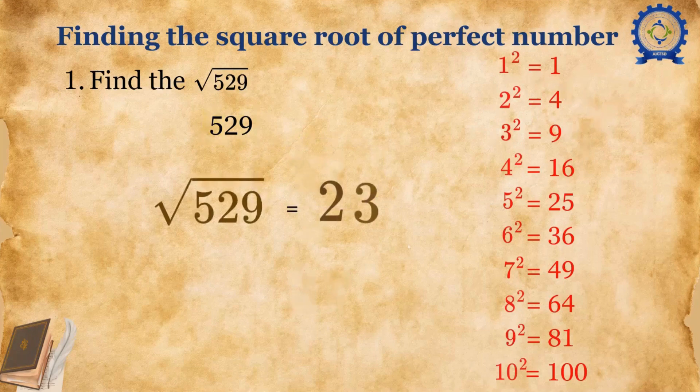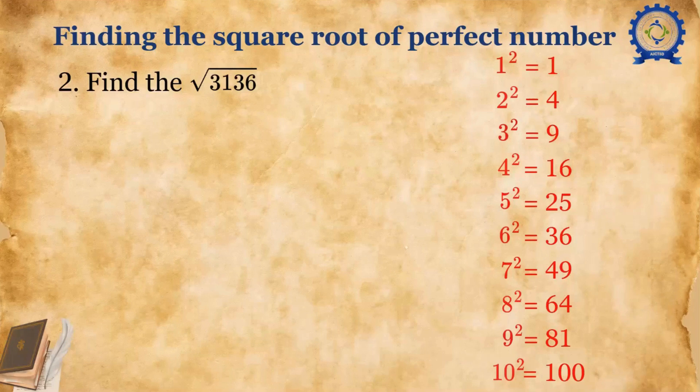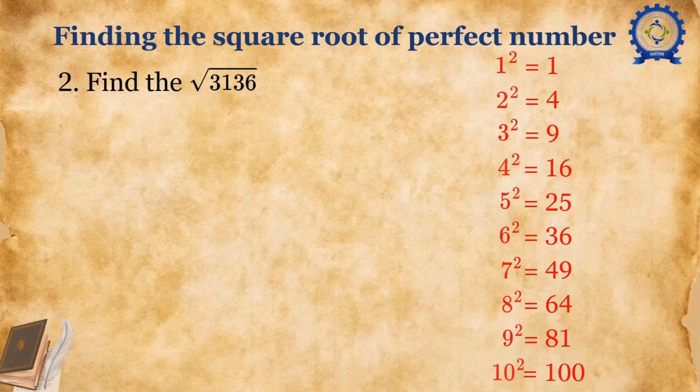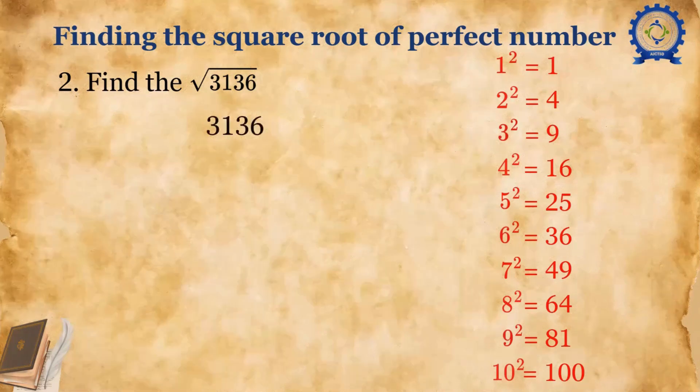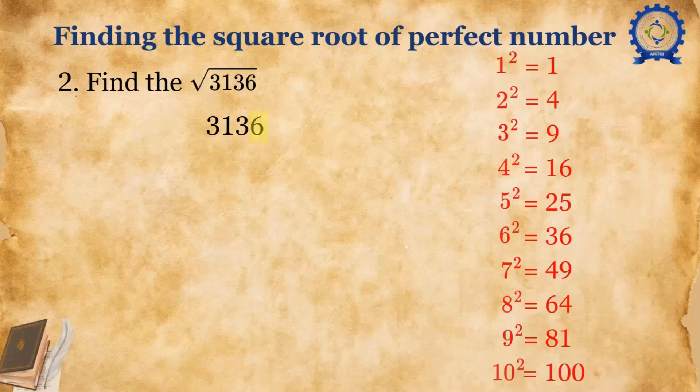So the square root of 529 is 23. Now let's take one more example. Find the square root of 3136. The number is 3136. We'll consider the unit digit, that is 6.